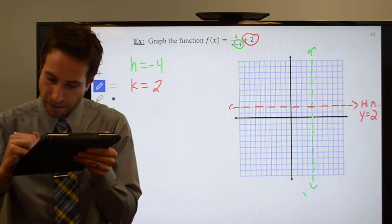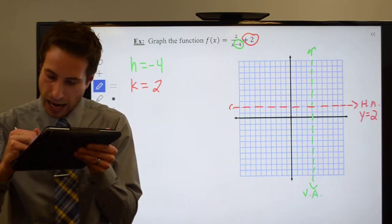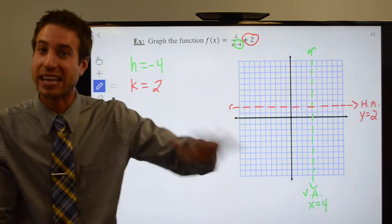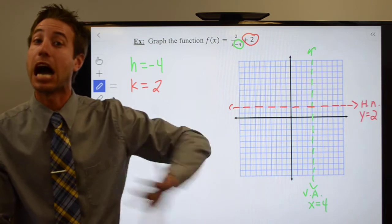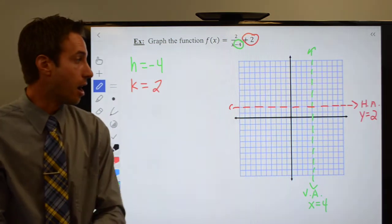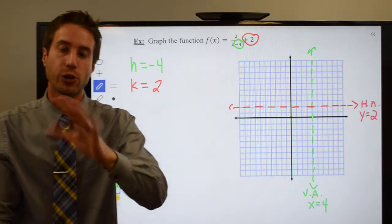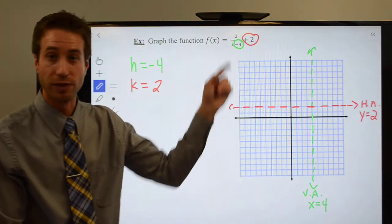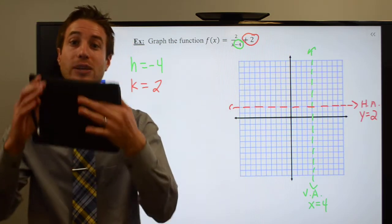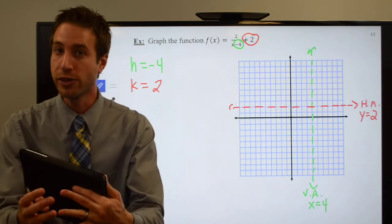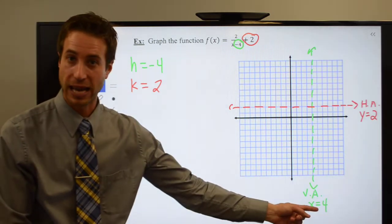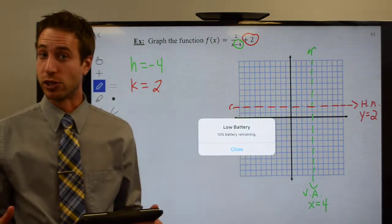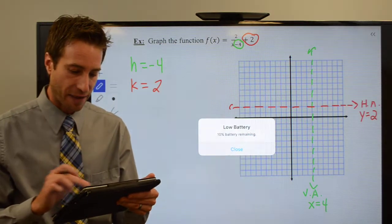So horizontal asymptote Y equals 2 because K is 2. And right here is my vertical asymptote at X equals 4. It's X equals 4 because H is a negative 4, and your horizontal shift is always the opposite direction of the value of H. Or you can think of it this way: what gives you division by 0? Positive 4 gives you division by 0. Any value that gives you division by 0 is going to show up on the graph as a vertical asymptote.